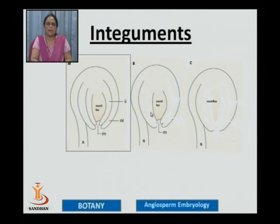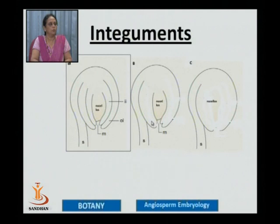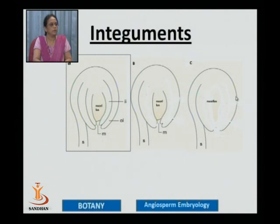In the family Acanthaceae, the nucellus is surrounded by only one integument — such a condition is known as a unitegmic ovule. There is another family known as Olacaceae — for example, Olax imbricata — where the body of the nucellus is directly attached to the funiculus. There are no integuments, and such an ovule is known as an ategmic ovule.